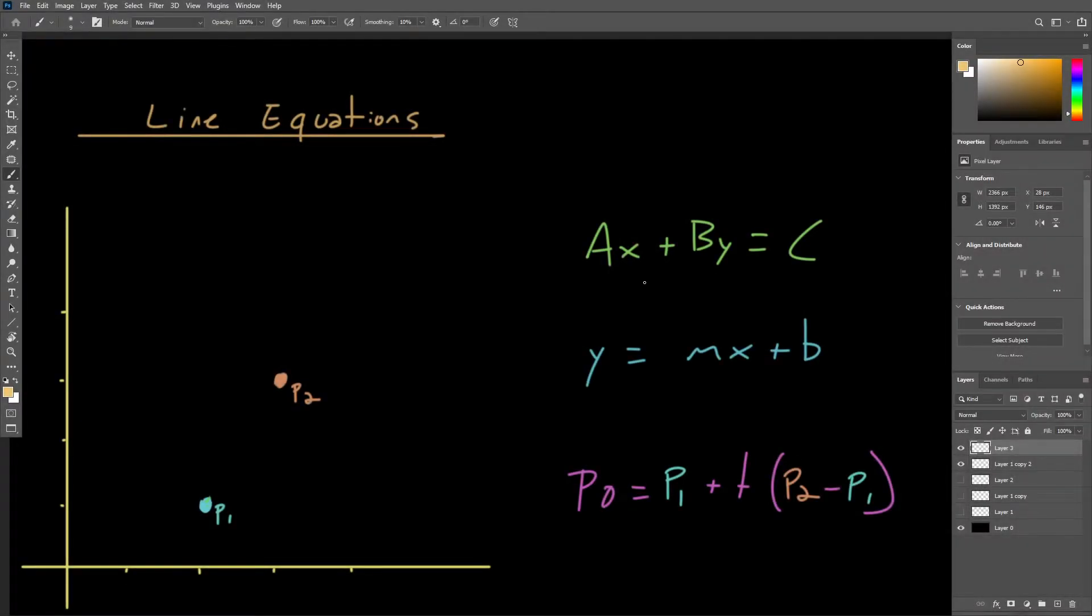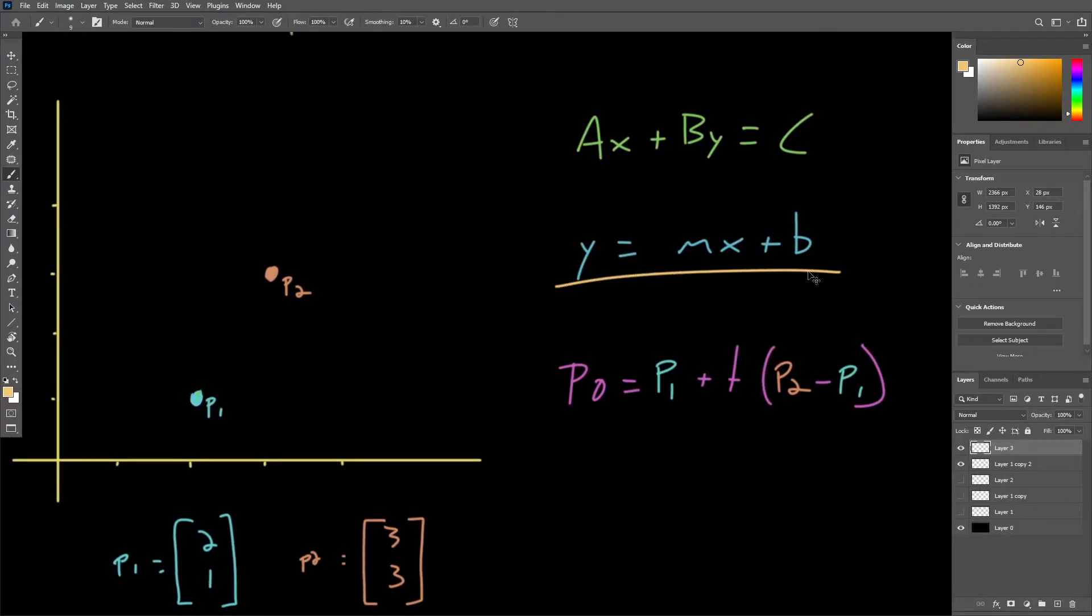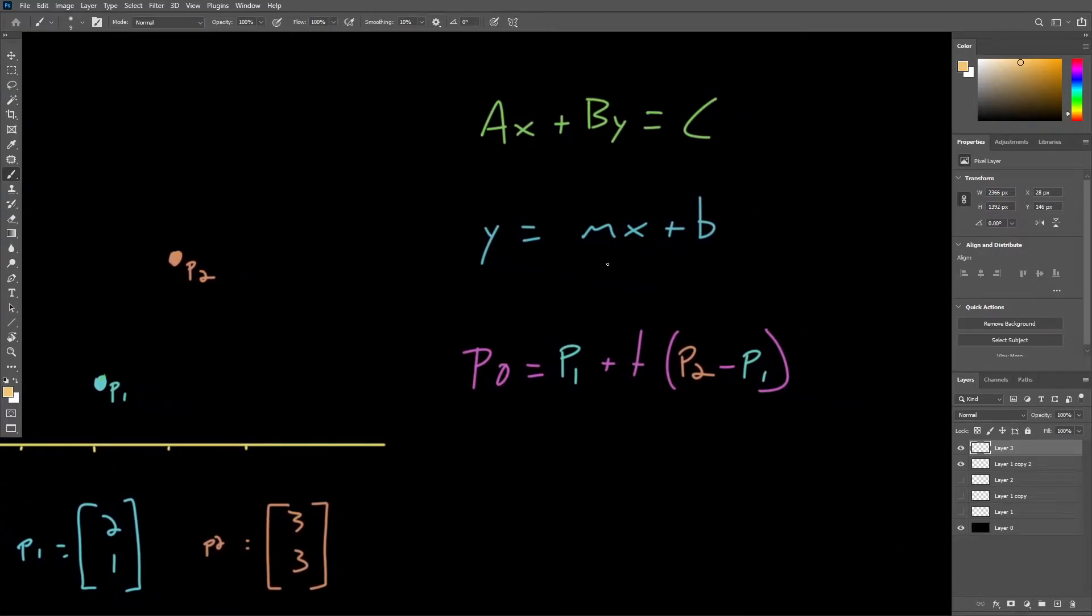From high school math, we'll recall that a two-dimensional line can be represented in standard form by AX plus BY equals C. Any point on this line will satisfy this equation. We can also describe the line in slope-intercept form with this equation, Y equals MX plus B.